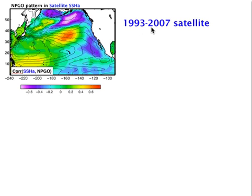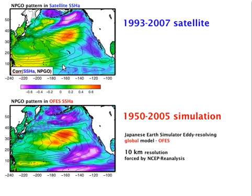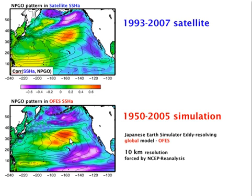Before proceeding any further, let's verify to what extent this spatial pattern is robust. To do that, we're going to look at some data output from a model — in this particular case, the Japanese Earth Simulator OFES eddy-resolving global model. This is an integration performed globally at 10-kilometer resolution, forced by the NCEP reanalysis from 1950 to present. I extracted data over the North Pacific and computed the NPGO index in the same way, then correlated it with the global sea surface height from the OFES model. You can find that these two maps are quite similar, suggesting that this pattern is robust.